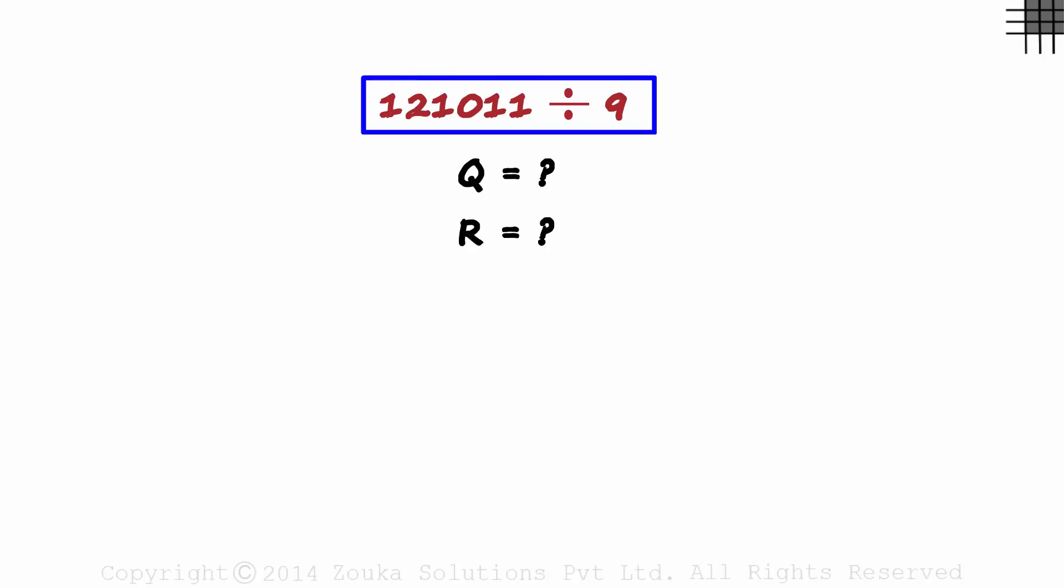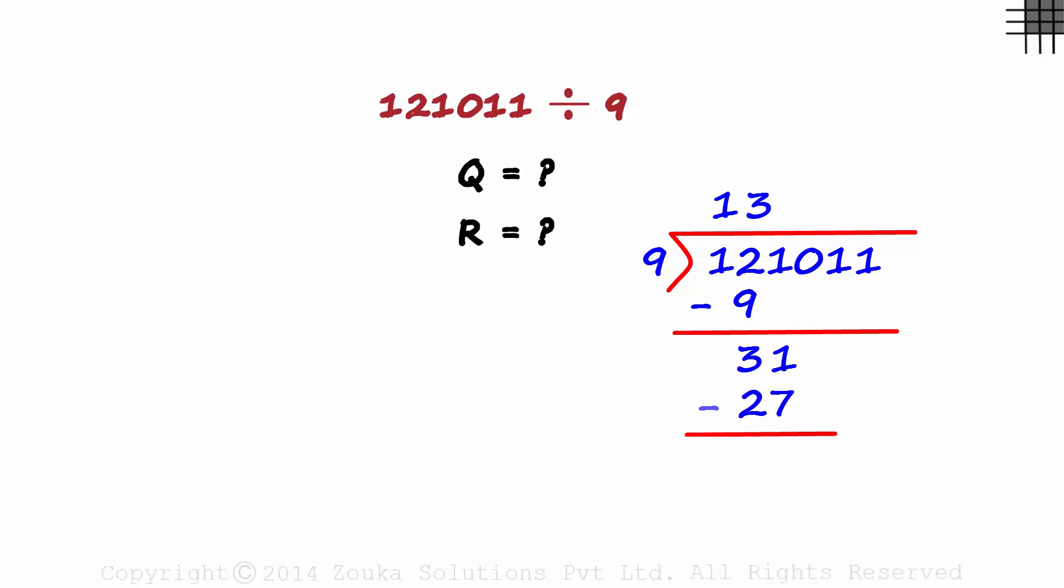Did you try dividing the number by 9 using the traditional approach? 9 times 1 is 9, 12 minus 9 is 3, get the 1 down and 9 times 3 is 27 and so on. This is a bit tedious. Let's understand a better and much quicker approach to divide numbers by 9.